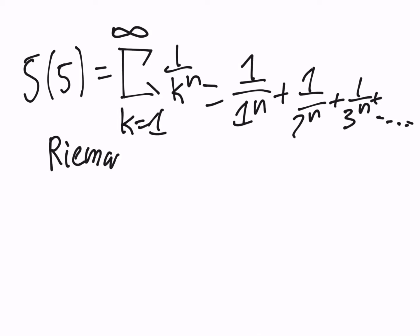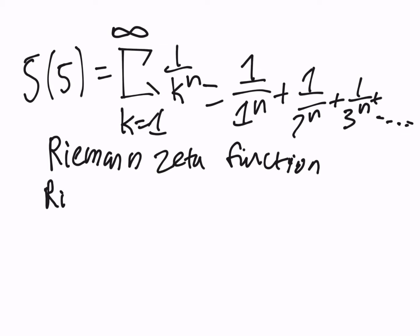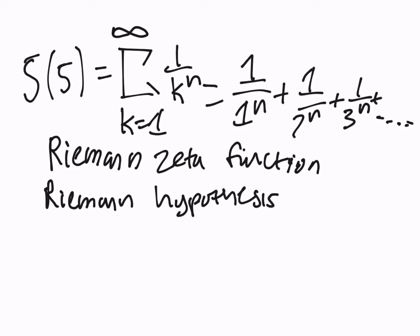The Riemann zeta function is part of the equation used for the Riemann hypothesis, which is a Millennium Problem that I'll probably be explaining in another one of these videos.